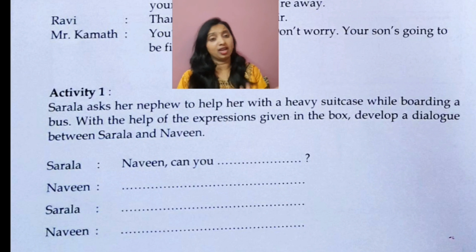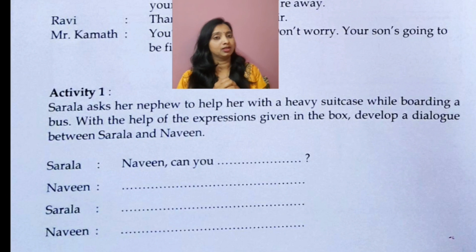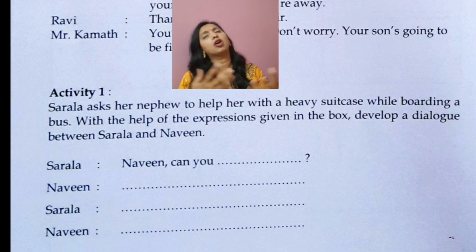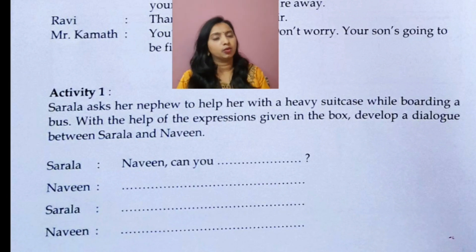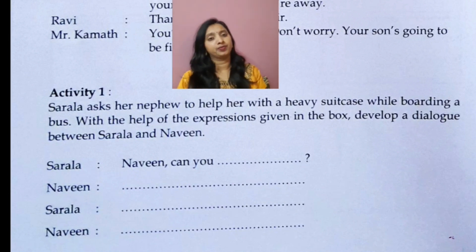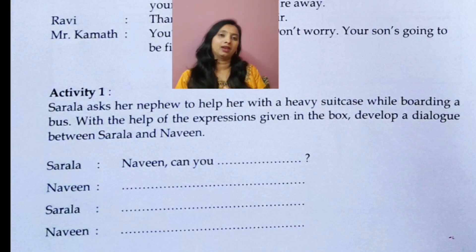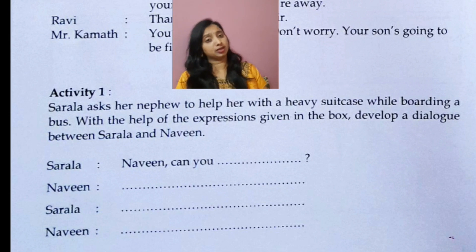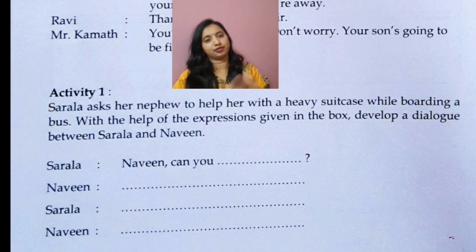Naveen's response could be: 'Certainly, how can I help you?' or 'Certainly, what can I do for you, auntie?' or 'Certainly, auntie, please tell me what I can do for you.' Then Sarala: 'Could you please keep this suitcase in the luggage box?' Naveen: 'Sure, auntie, I'll do that for you.' Try it by yourself.